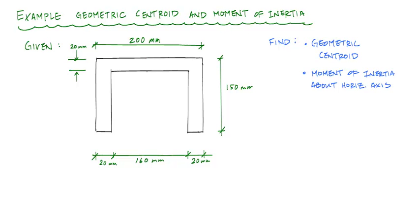The first thing I like to do is look for any planes or lines of symmetry. I see from this cross section a vertical line of symmetry. I don't see a horizontal line of symmetry, but I do know that my geometric centroid will be somewhere along this vertical line of symmetry. And because I have more area to one side of the cross section, I know that my centroid is going to be somewhere closer to where there's more area — probably around here.